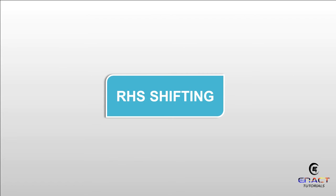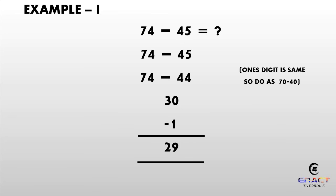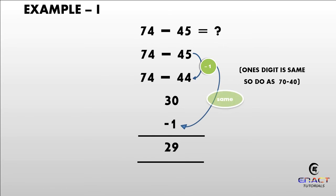RHS shifting. Example number 1: 74 minus 45. Subtracting 1 from 45, it will become 44. As you can see, the ones digit is the same, so directly subtract 74 minus 44. Hence our answer is 30. Keeping minus 1 the same and subtracting 30 minus 1, our answer will become 29.